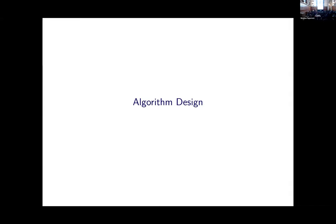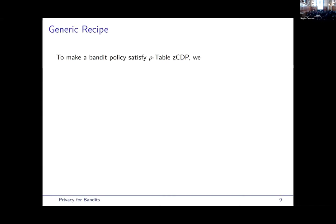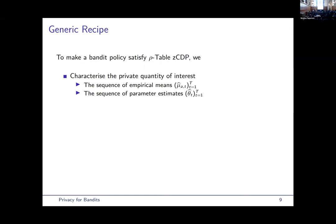So, now let's move to how to design private bandit algorithms. We follow the same generic recipe for the three settings discussed before. So, the first step is to characterize what is the private quantity of interest. This is just the sequence of empirical means for the first setting of stochastic bandits and the sequence of parameter estimate theta hats for linear and linear contextual bandits.